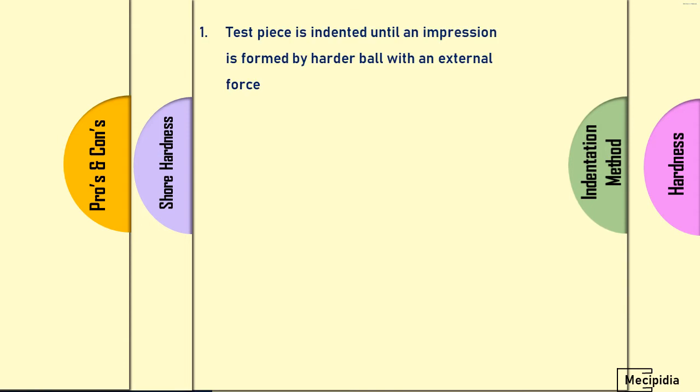The test piece is indented until an impression is formed by a harder ball with external force. If you see the image below, the ball indenter with external force is applied on the test piece, creating an impression called indentation. That indentation diameter is measured and converted into hardness either by chart or by calculations.